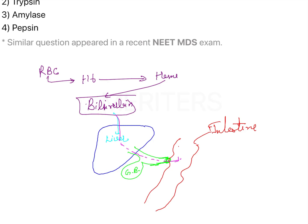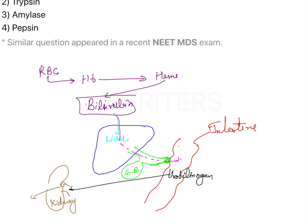Inside the intestine, bilirubin will be converted to urobilinogen. This urobilinogen is water soluble and that's why it can go to the kidney — since it is water soluble it can be excreted out through the kidney. So urobilinogen is excreted through the kidney.